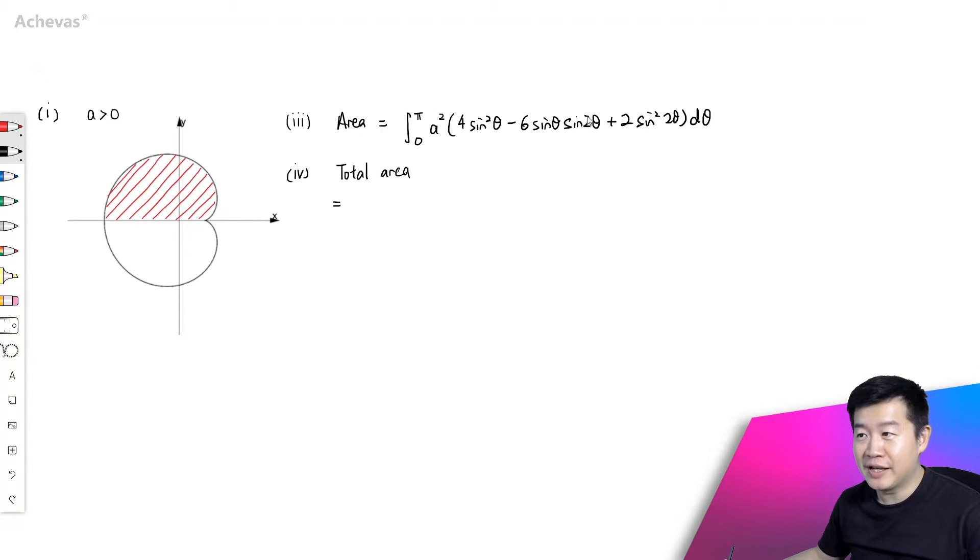From part 3, we have come up with the integral that represents half of this entire thing. So now the total area should be 2 times what we have found in part 3.